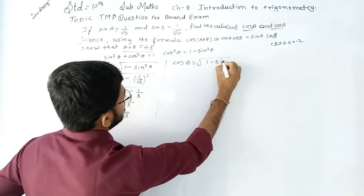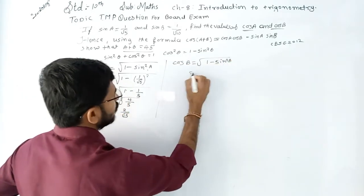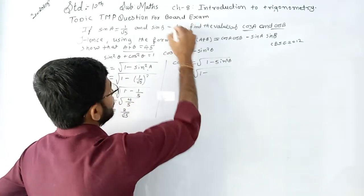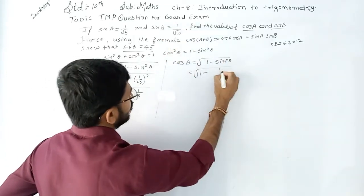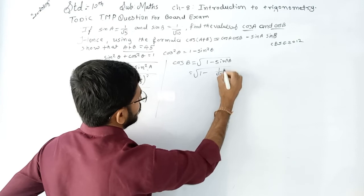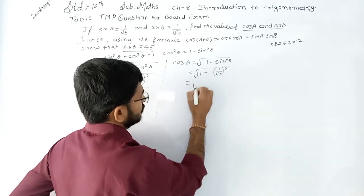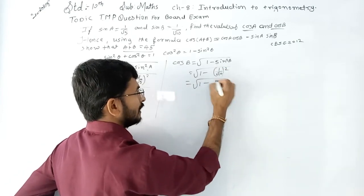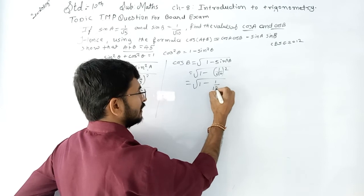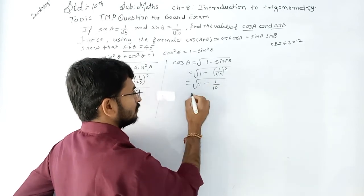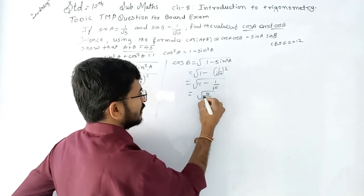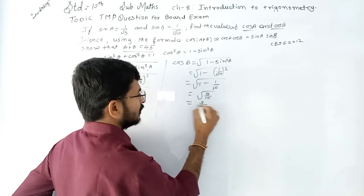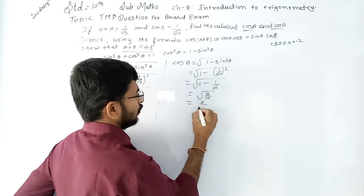Similarly, cos B = √(1 − sin²B). Putting in the value of sin B = 1 upon root 10, sin²B = 1/10. Then 1 − 1/10 = 9/10. The square root of 9 is 3, and the square root of 10 remains. So cos B is equal to 3 upon root 10.